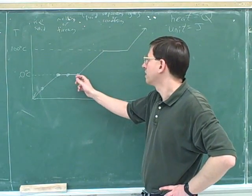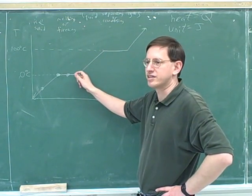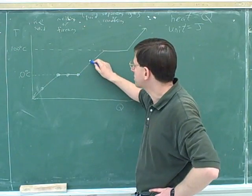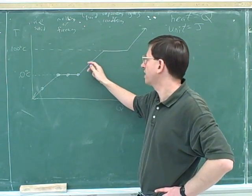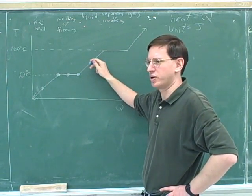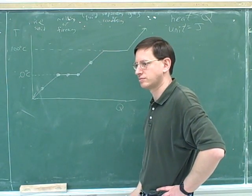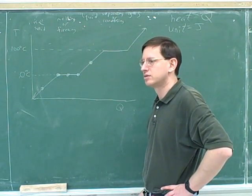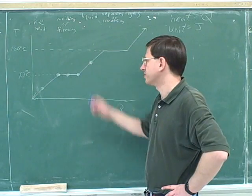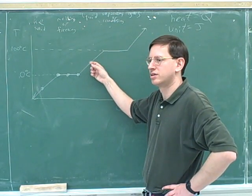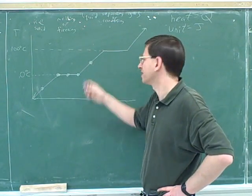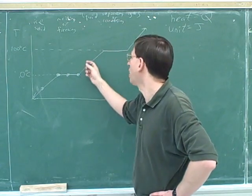So here we would have all liquid at zero degrees Celsius. Well, describe to me what would the contents of the experiment be at this point, approximately? Liquid. Yeah. And about what temperature? 50. Yeah. It looks like about 50 degrees. But it would all be liquid.